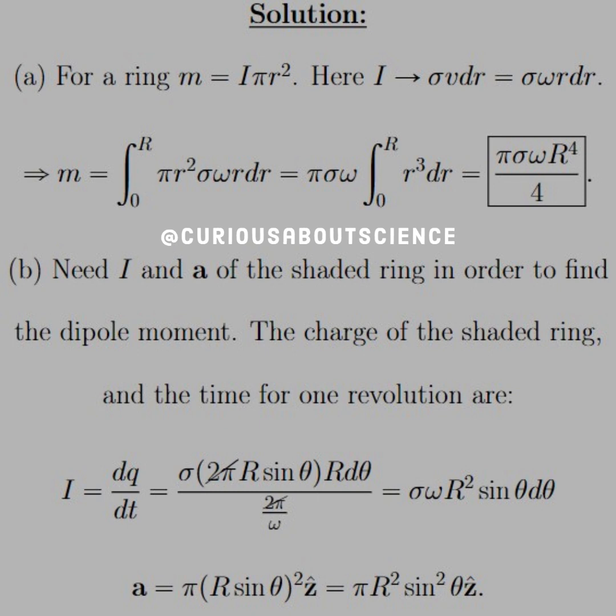Now, dt is the time for one revolution, which we know is 2 pi over omega. Whatever that omega actually is not given to us, so it's just a variable. The 2 pi's cancel, leaving us with a current of sigma omega r squared sine theta d theta.